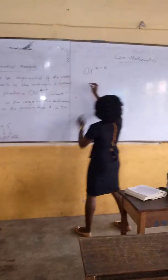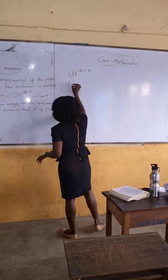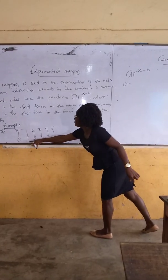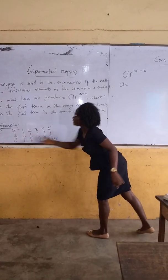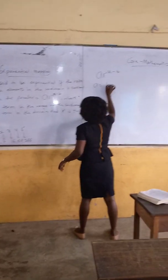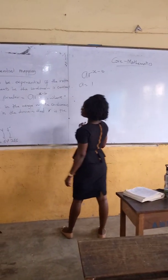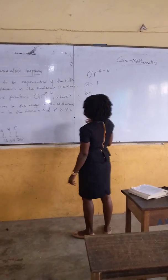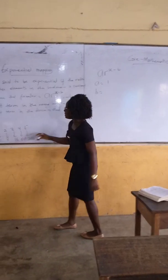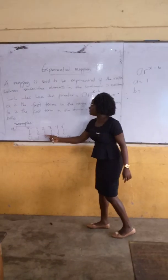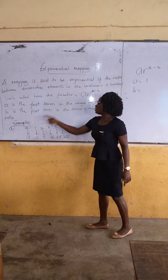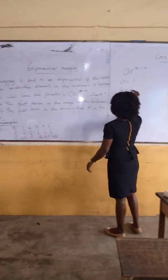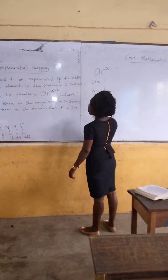So our A equals the first term in the co-domain. Our first term is 1, so A equals 1. Then B equals the first term in the domain, which is also 1.